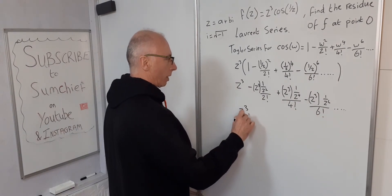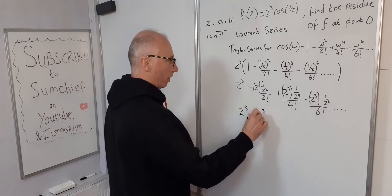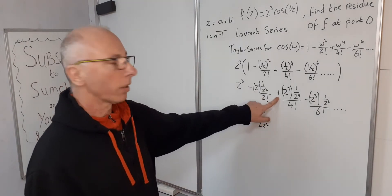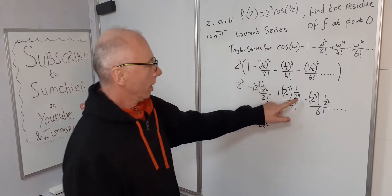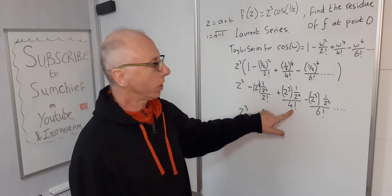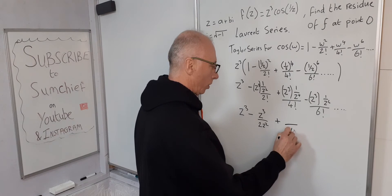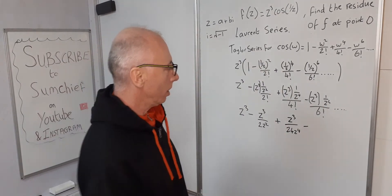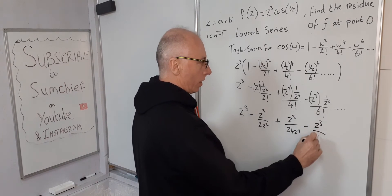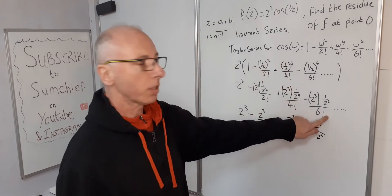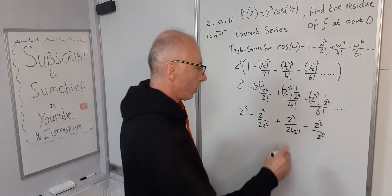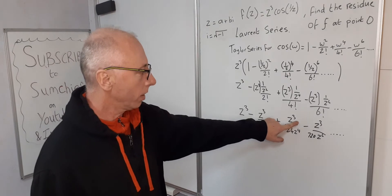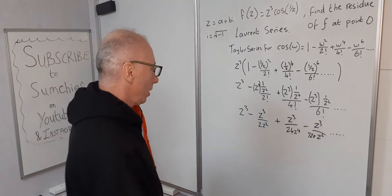Simplifying each term: the first term is z³. For the second, z³ divided by 2z² gives z/2. For the third, z³ divided by 24z⁴ gives z to the minus 1, or 1/(24z). For the fourth, z³ divided by 720z⁶ gives z to the minus 3, or 1/(720z³). So each z power from the denominator subtracts from 3.